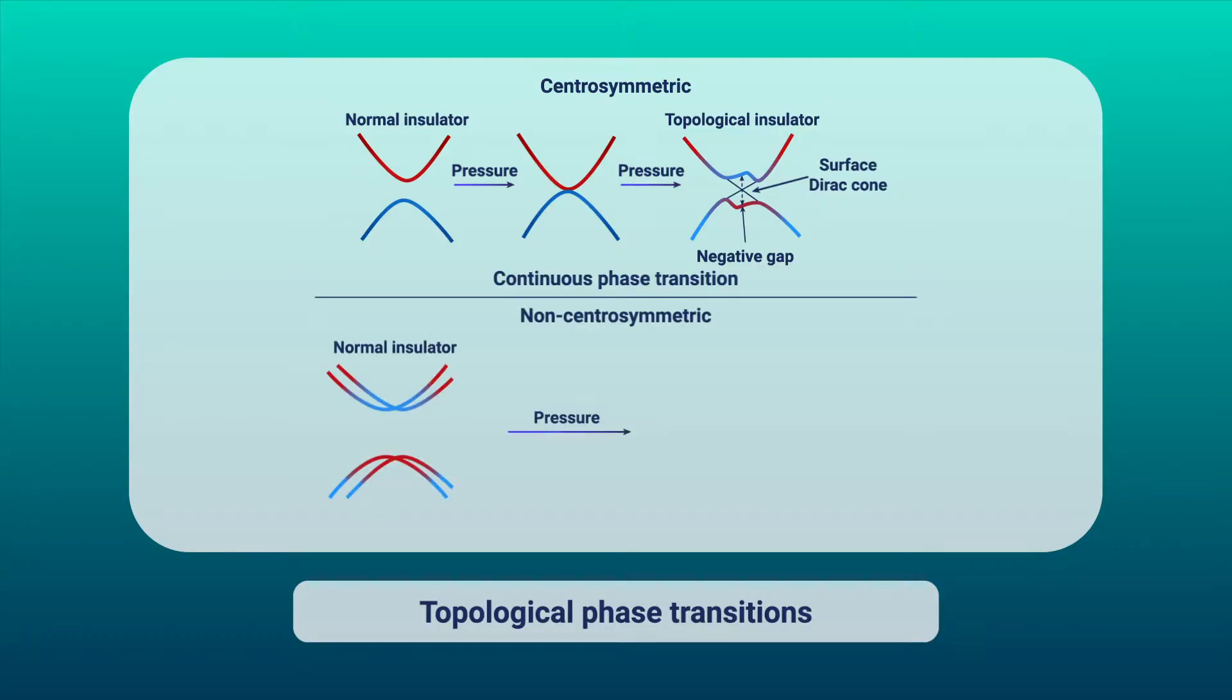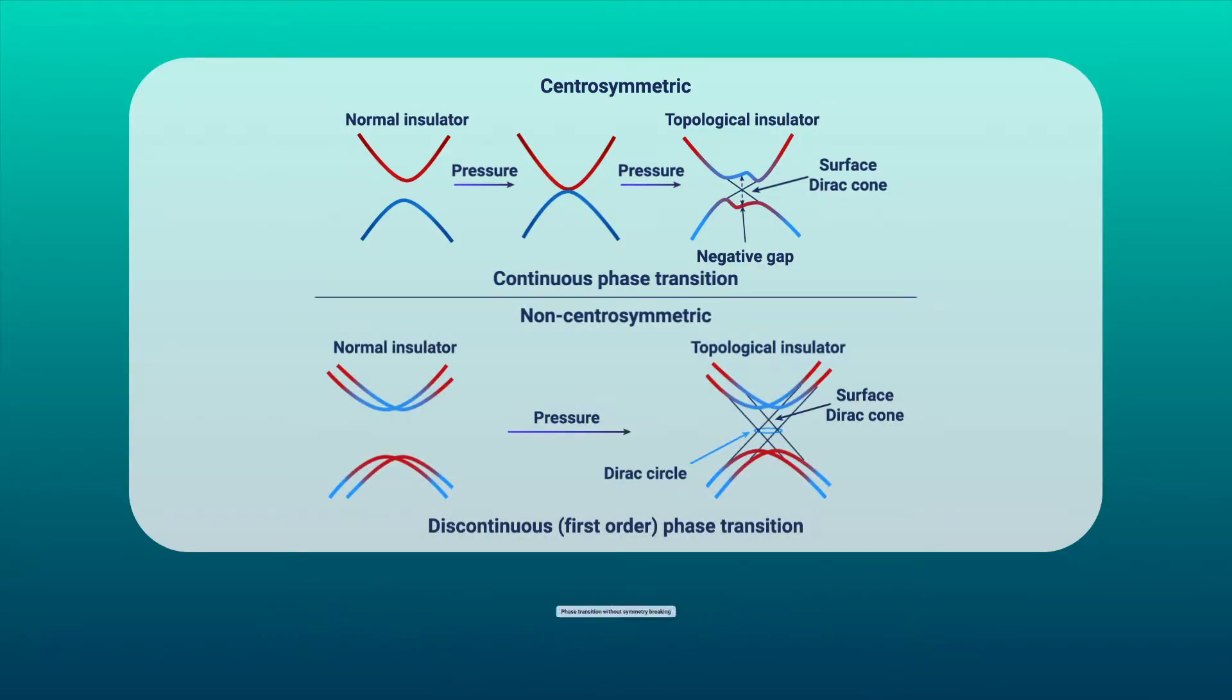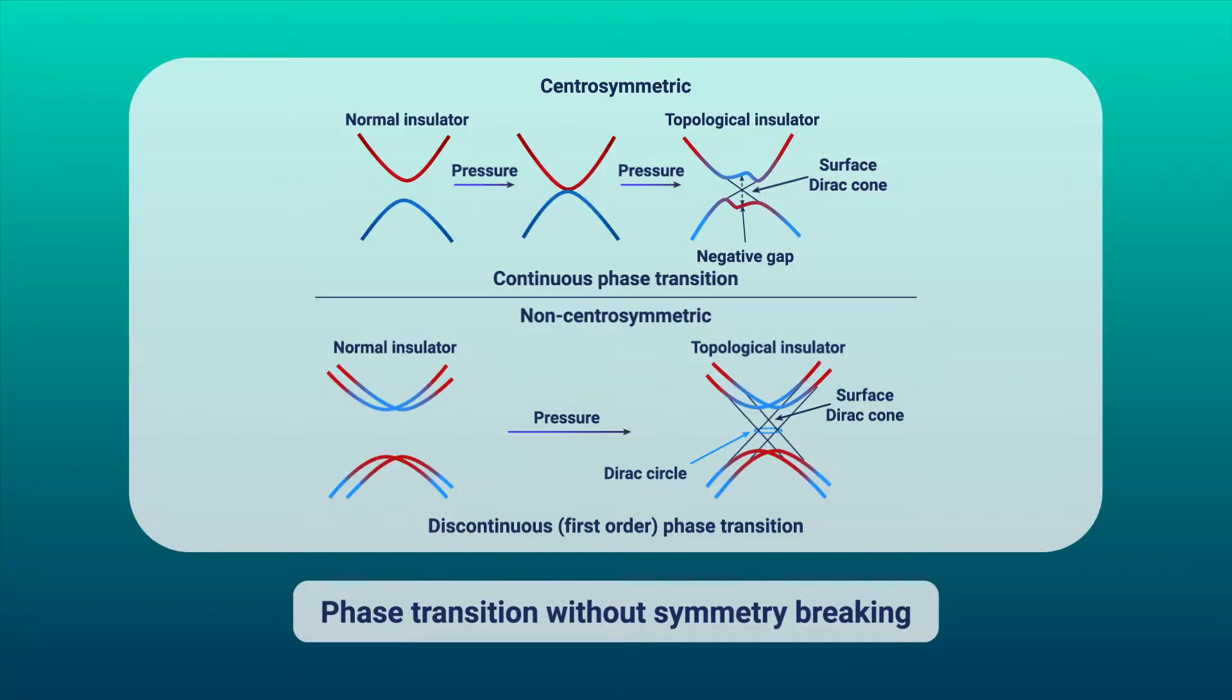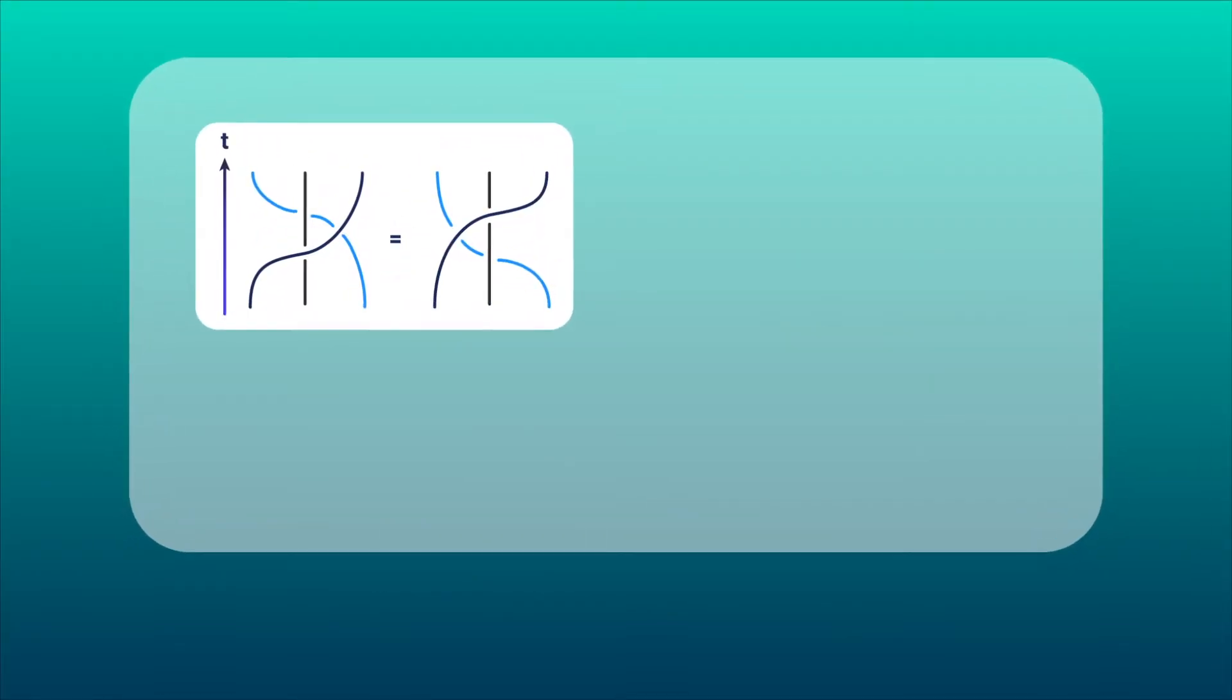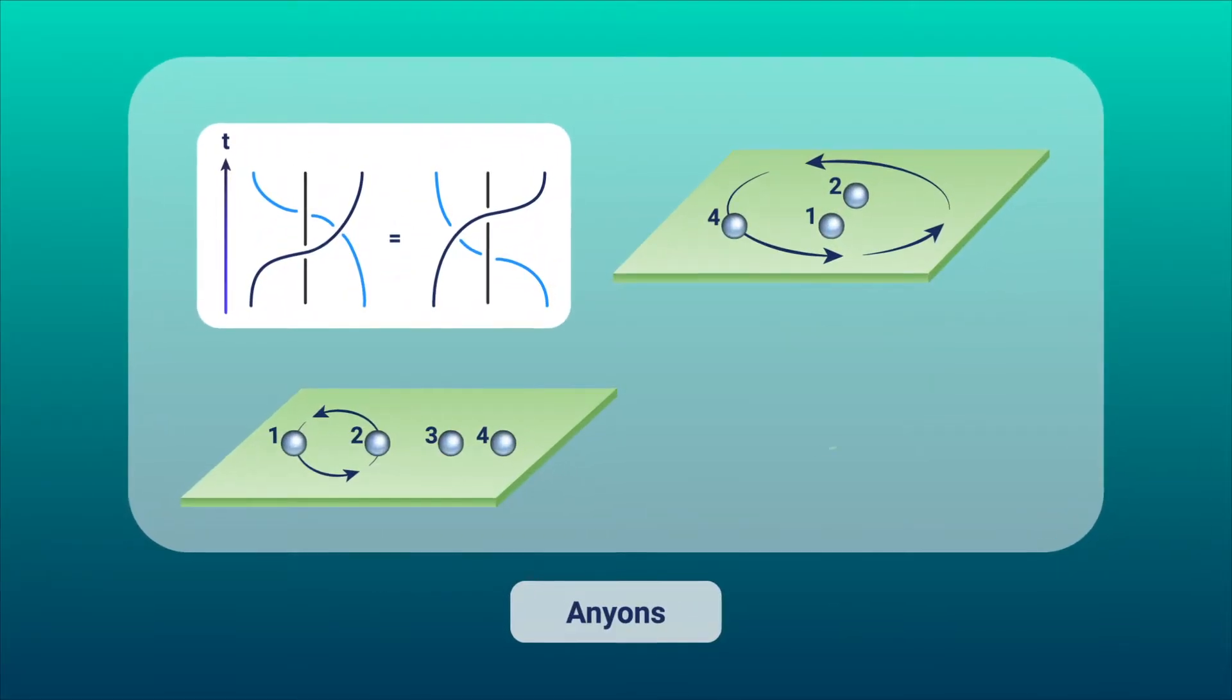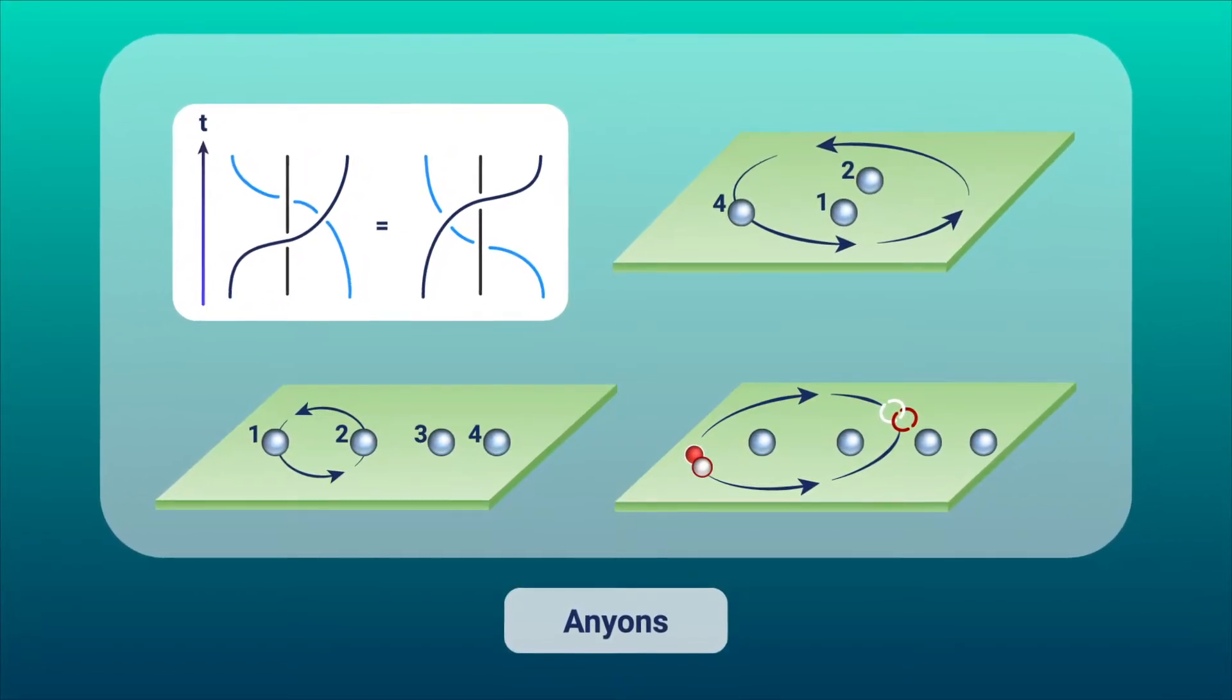These are gapped phases that appear at absolute zero temperatures without breaking symmetry. They have been observed in fractional quantum Hall systems and in the manifestation of anions, quasi-particles that are neither bosons nor fermions.